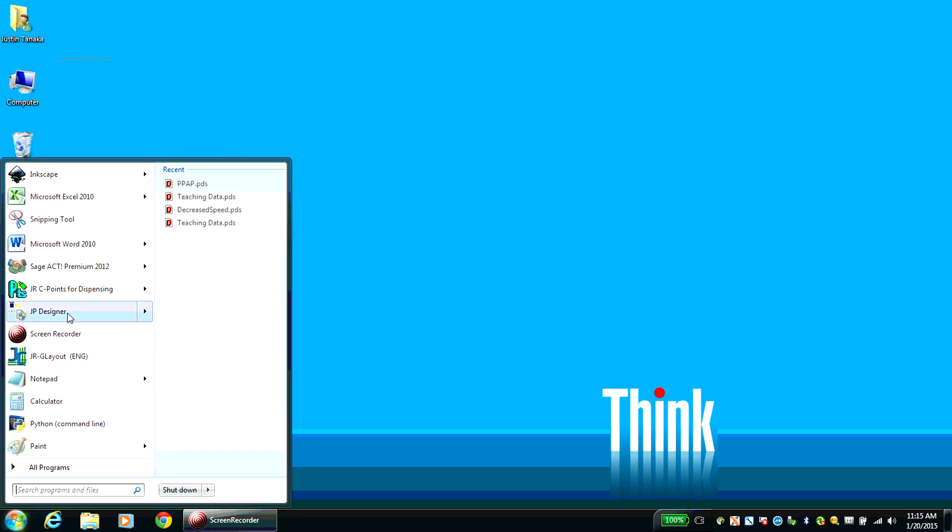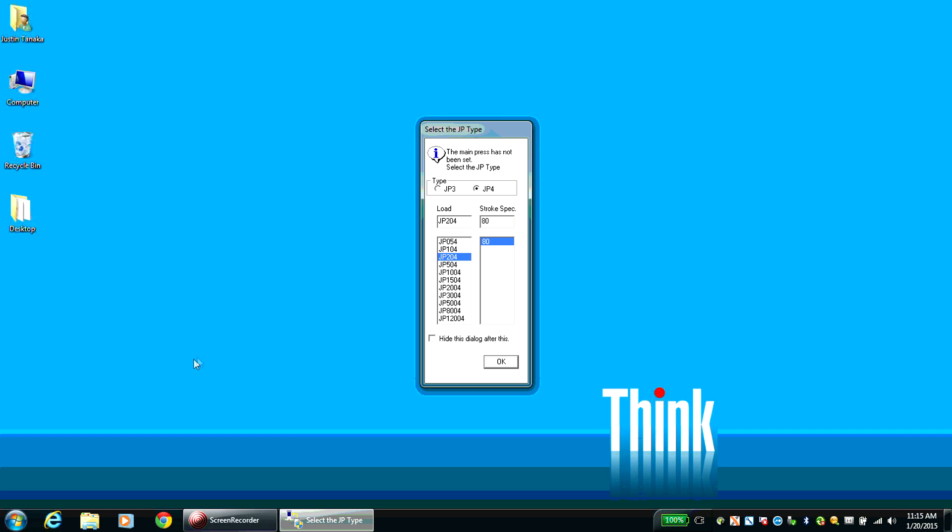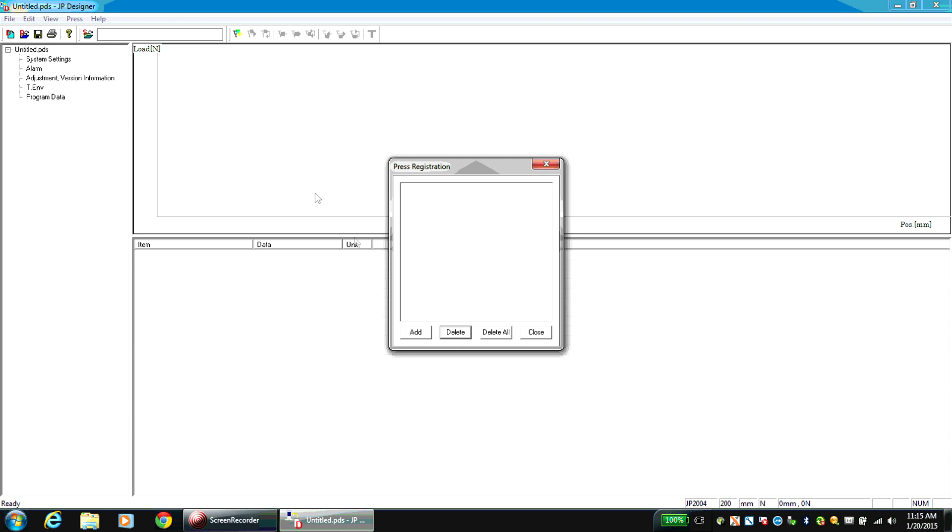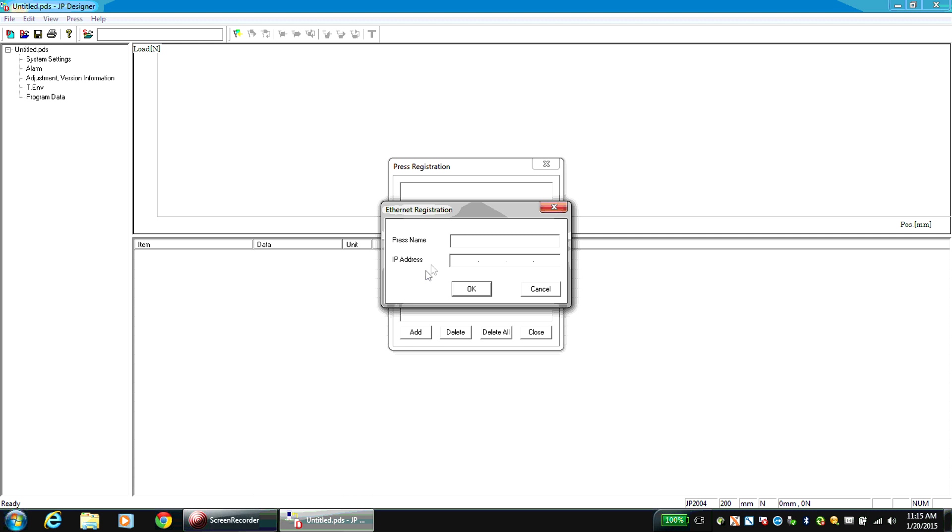With the JP4 and PC connected, start JP Designer. Select your model specifications. The ElectroPress IP addresses must be registered in JP Designer or JP Sampler. If this information is registered in either program, the other automatically uploads the registered information. From the drop-down Press menu in the menu bar, click Press Registration. Click Add and select Ethernet and fill in the required fields. Choose an appropriate name for the press and match the IP address with the ElectroPress setting.